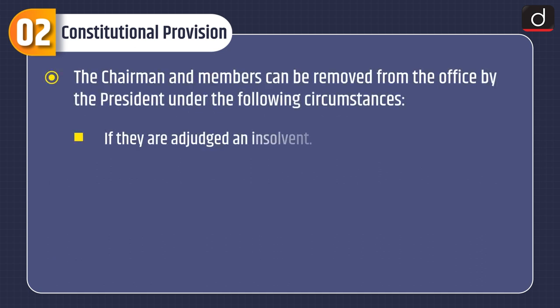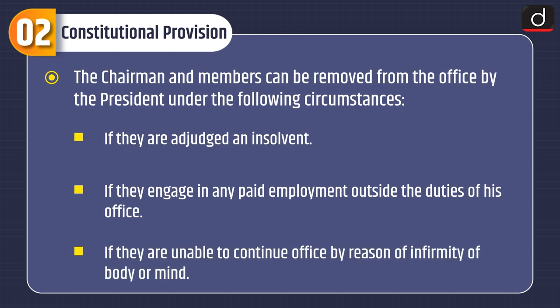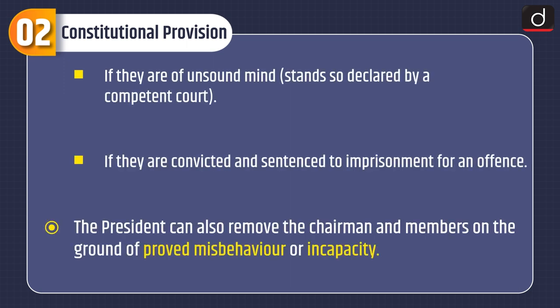The chairman and members can be removed from office by the President under the following circumstances: if they are adjudged insolvent, if they engage in any paid employment outside the duties of their office, if they are unable to continue in office by reason of infirmity of body or mind, if they are of unsound mind as declared by a competent court, or if they are convicted and sentenced to imprisonment for an offense. The President can also remove them on the ground of proved misbehavior or incapacity.